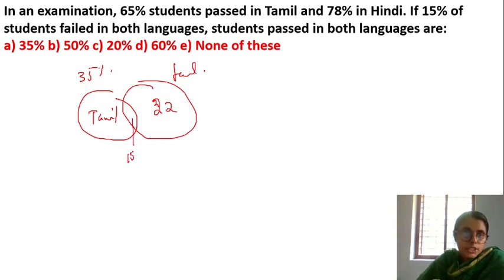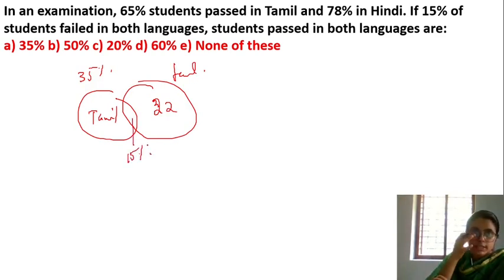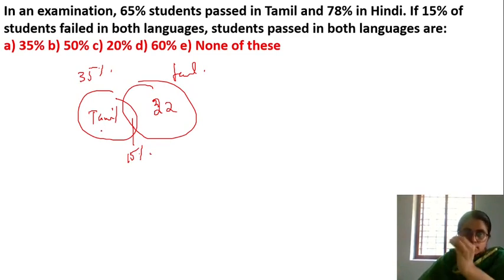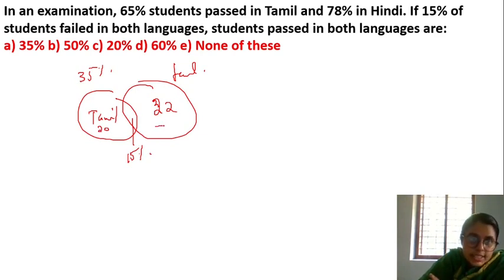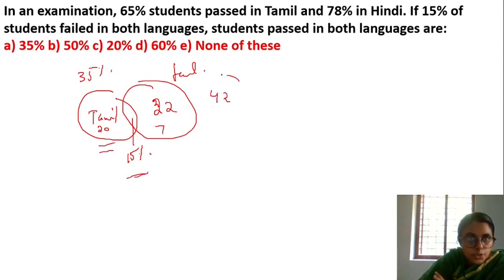12% failed in Tamil only. In Tamil, how many fail? 20. In this case, 7. So 35 plus 7 is 42 — those who failed in at least one subject.